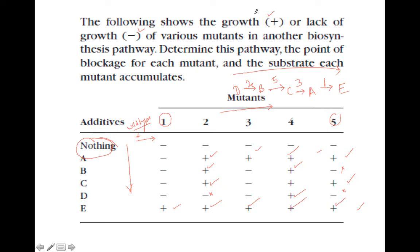There is one more mutant left — mutant number 4. Unless you provide all of them it will not grow, which tells us that mutation 4 is even before D. So if you provide D, B, C, A, and E it will grow.